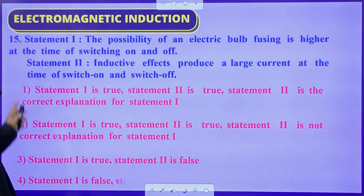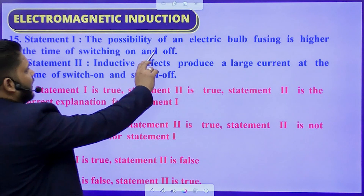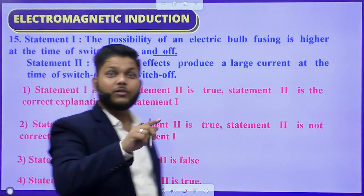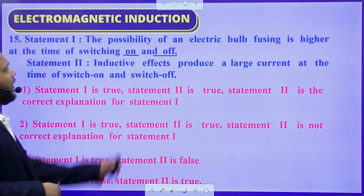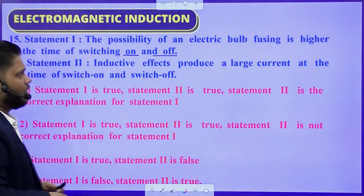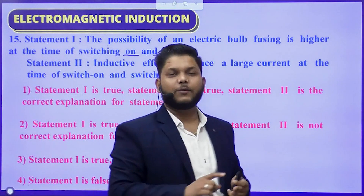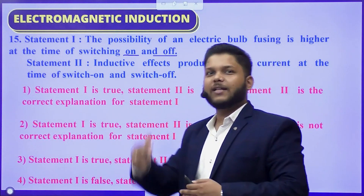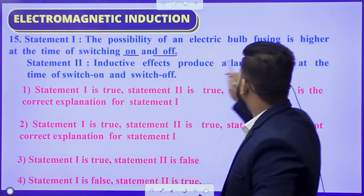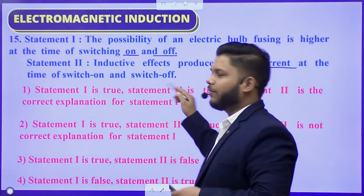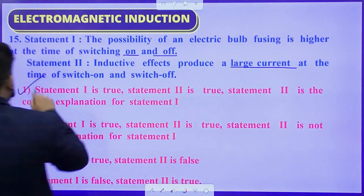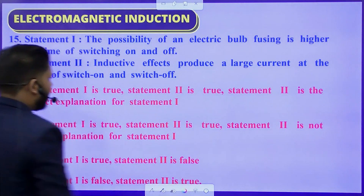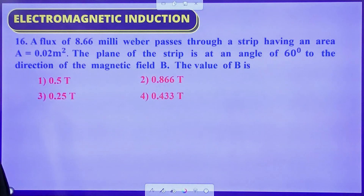Question number 15 is an assertion-reason question. Statement 1: The possibility of an electric bulb fusing is higher at the time of switching on and off — correct, because electromagnetic induction occurs during switching, producing large induced current that can fuse the bulb. Statement 2: Inductive effects produce a large current at the time of switch on and switch off — correct. Both statements are true and Statement 2 correctly explains Statement 1. The correct answer is A — first option.